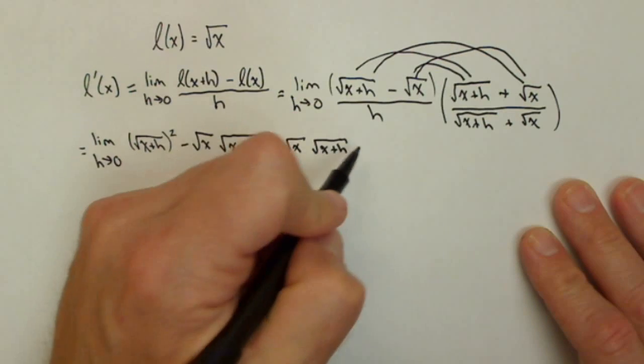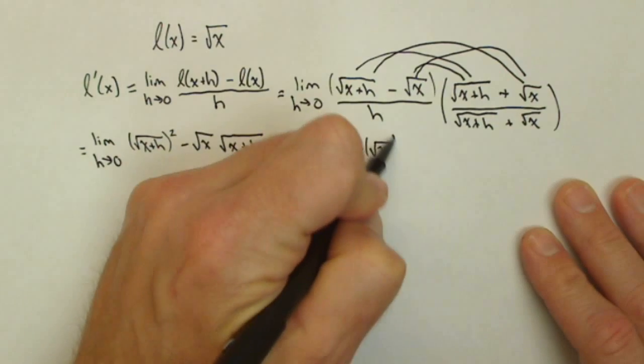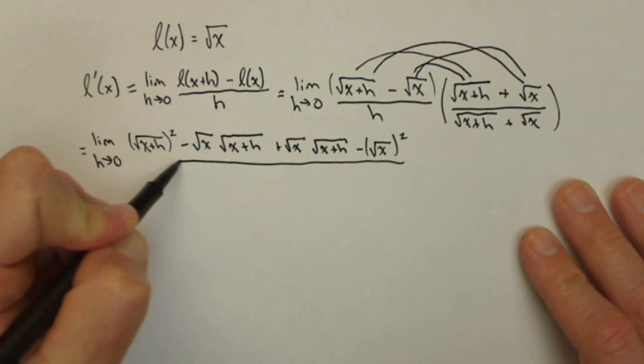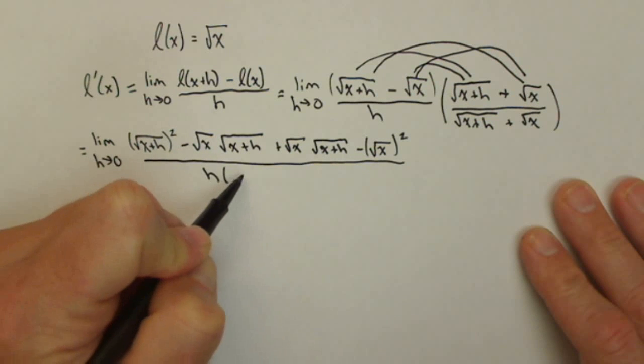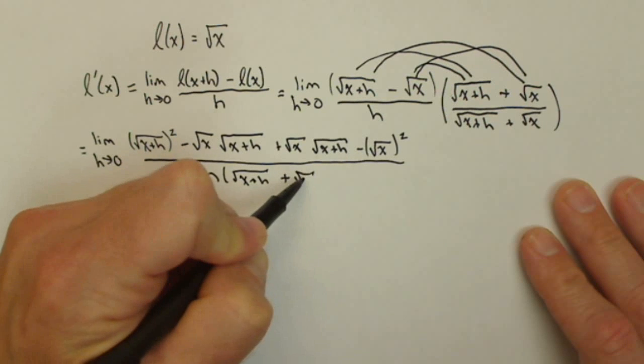And then finally when I multiply these two terms I get negative square root of x squared because it's getting multiplied by itself. All over h times square root of x plus h plus square root of x.